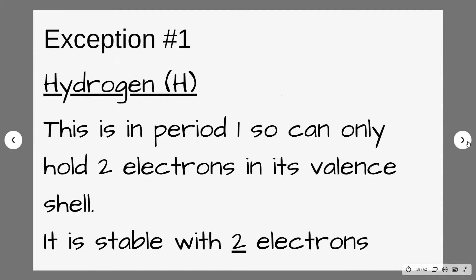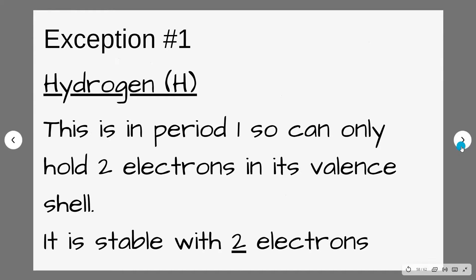The first exception is hydrogen. Hydrogen and helium are in period one, so the first shell can only hold a maximum of two electrons in its valence shell. Because hydrogen only has that first shell, it is stable with two electrons. So whenever you're counting up electrons around hydrogen, you're making sure it has two.